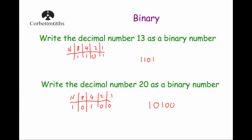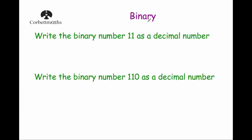Now let's look at writing binary numbers as decimal numbers. We're going to write the place value headings above the binary digits. For the binary number 11, we have a 1 in the 1s column and a 1 in the 2s column, so that's 1 + 2 = 3. For the binary number 110, the place value headings are 1, 2, 4 — we've got no 1s, a 2, and a 4, so that's 2 + 4 = 6.